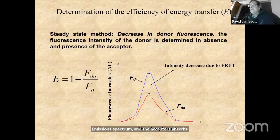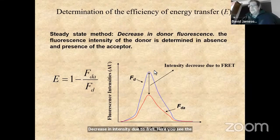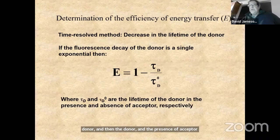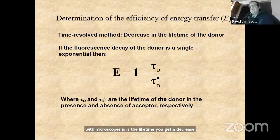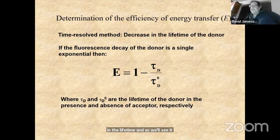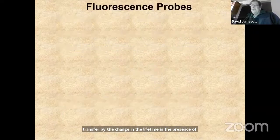There must be spectral overlap between the donor's emission spectrum and the acceptor's absorption spectrum. Ways to measure energy transfer have largely been based on intensity — you see a decrease in the donor intensity in the presence of acceptor. But more important for microscopy is the lifetime: you get a decrease in the lifetime, and as we'll see in tomorrow's lecture, there are many reasons the lifetime is a superior measurement to intensity. You can measure transfer efficiency from the change in lifetime in the presence versus absence of acceptor.